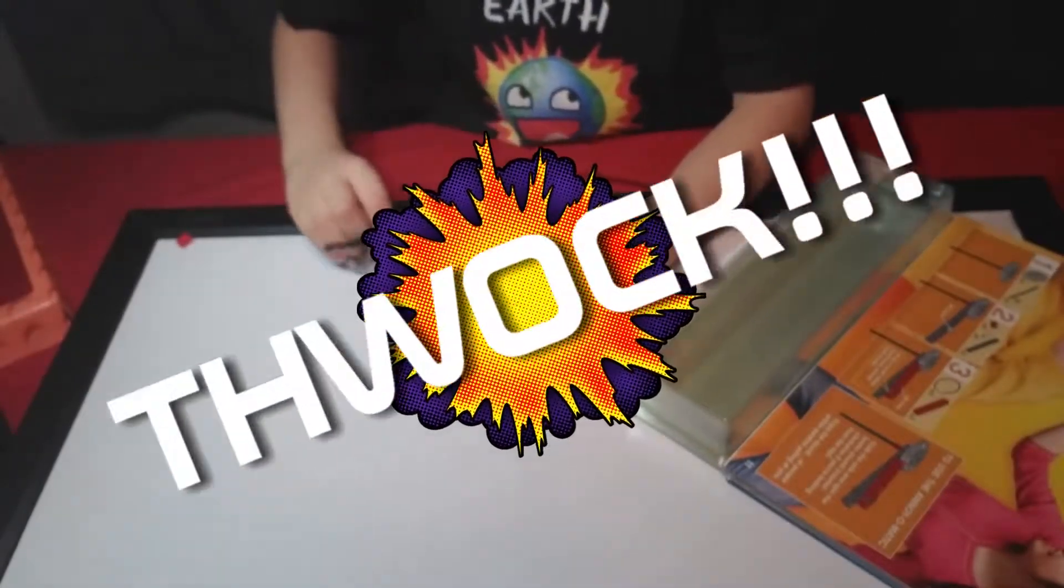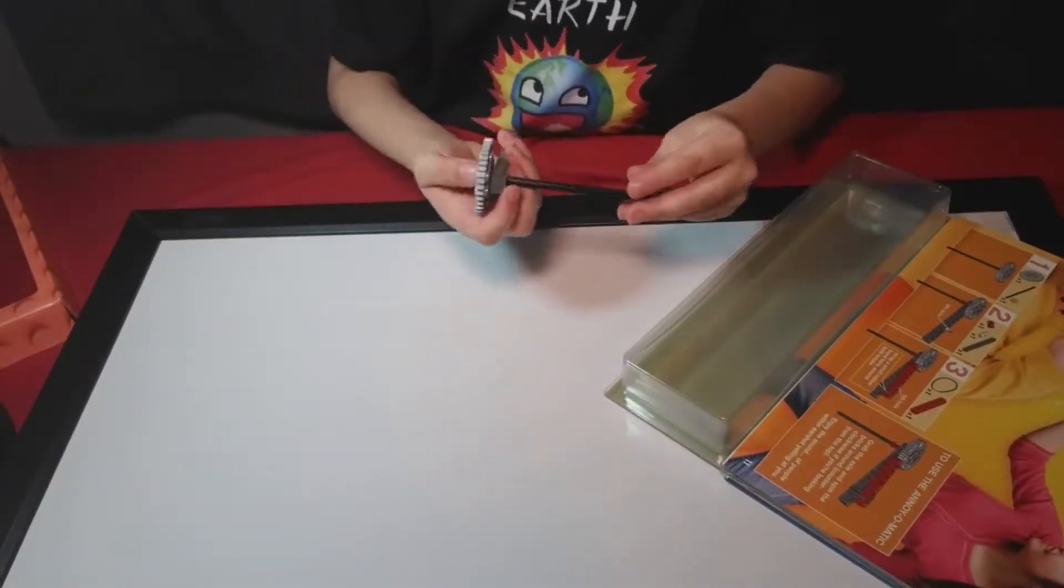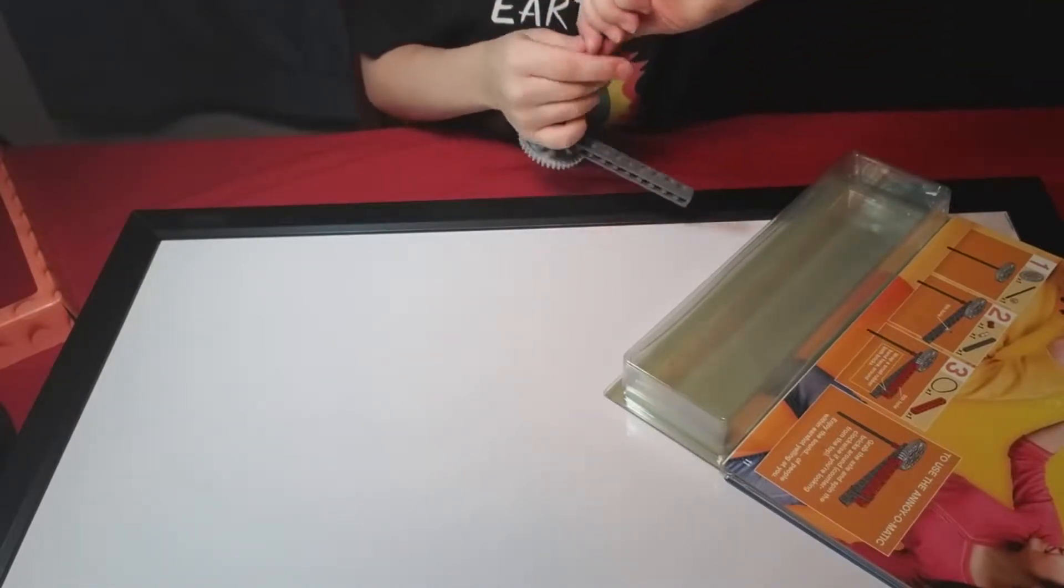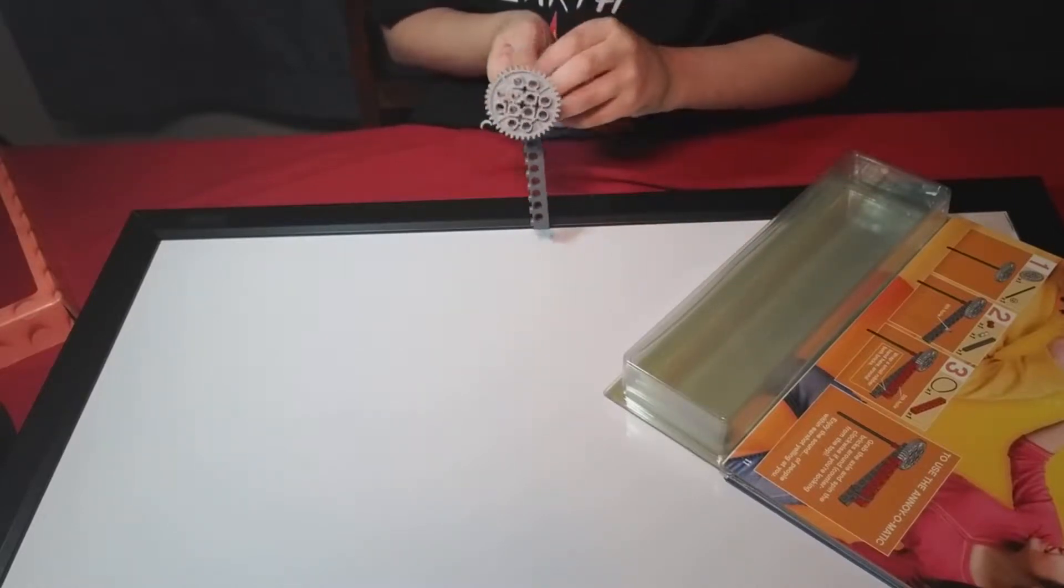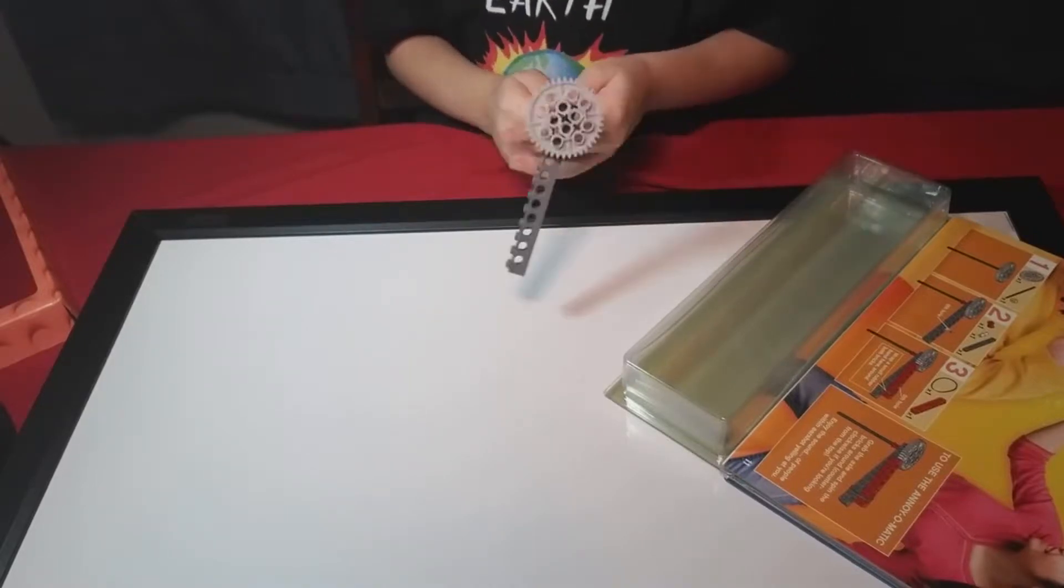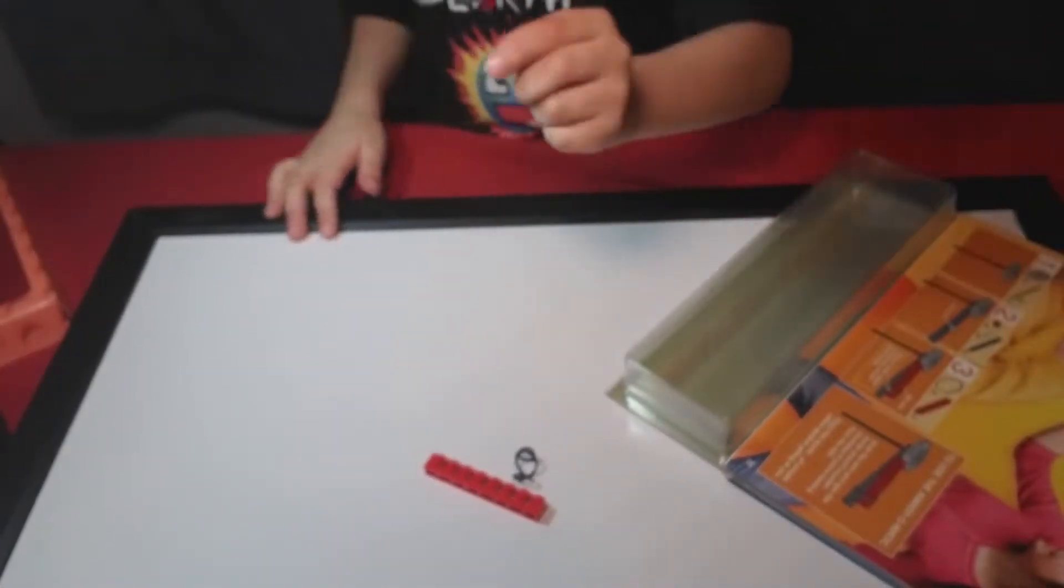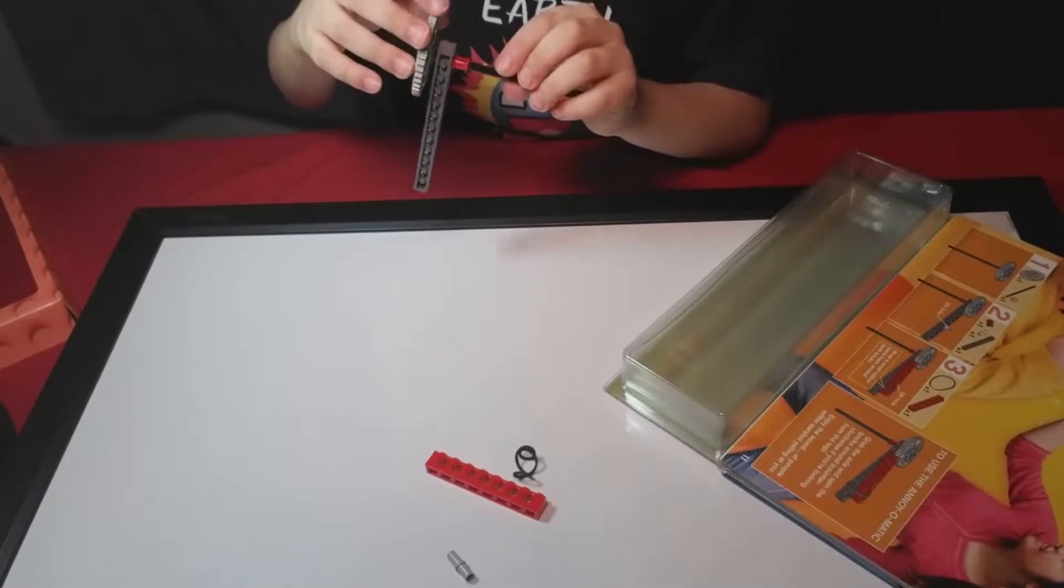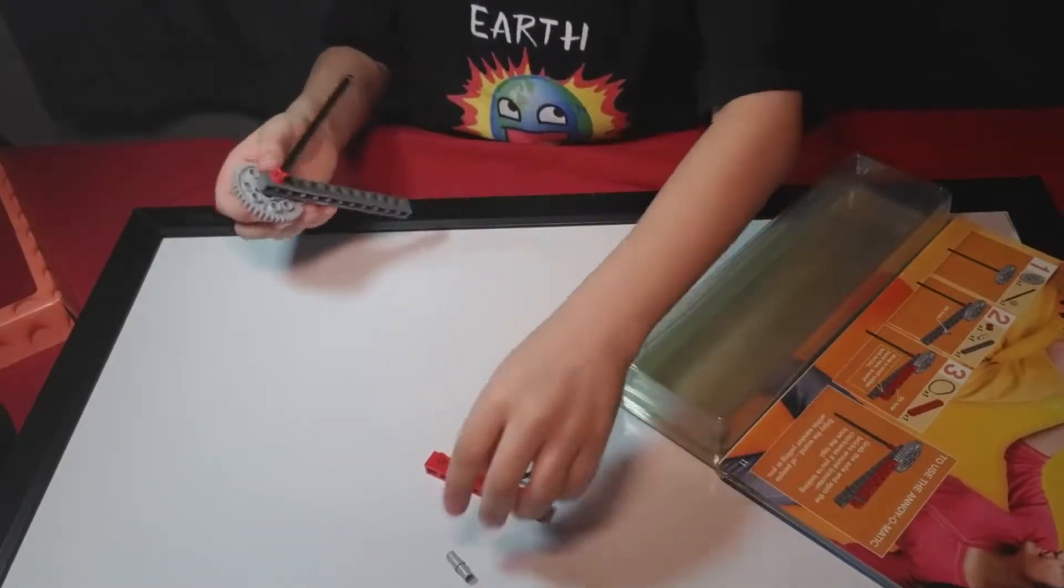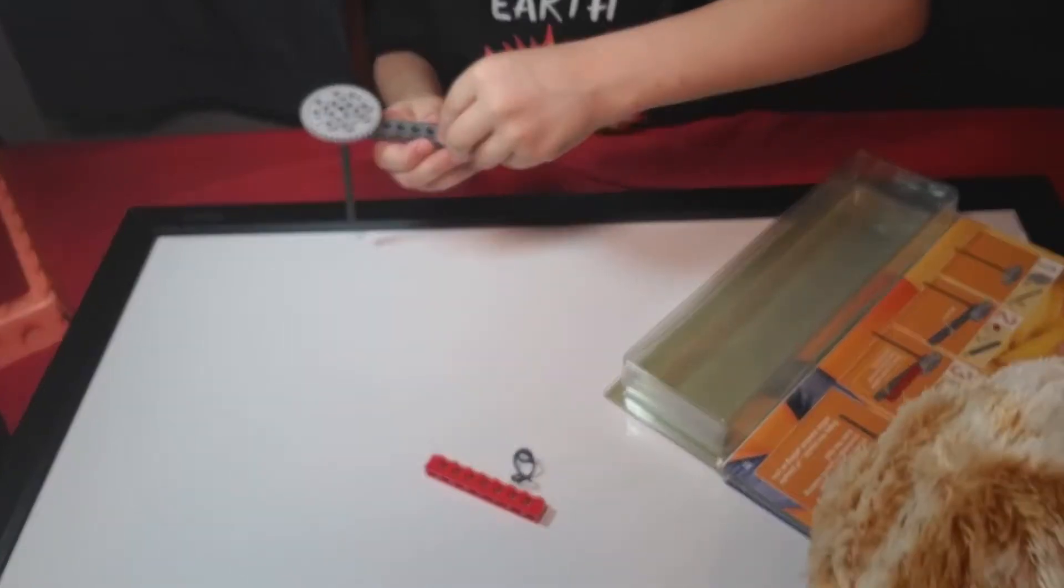And one rubber band. Wait, is that a rubber band? That's a small rubber band. Okay, we'll get to that. And that. And one of these. Okay. There's a rubber band and a red thing. And here. That goes in the third hole. I'm sorry, eighth hole.